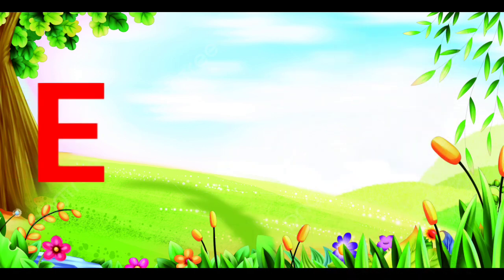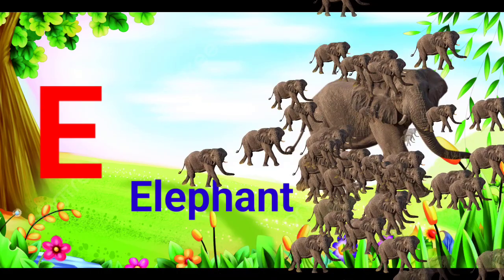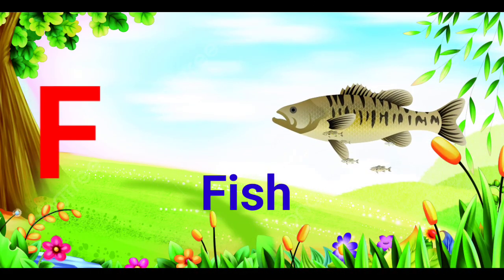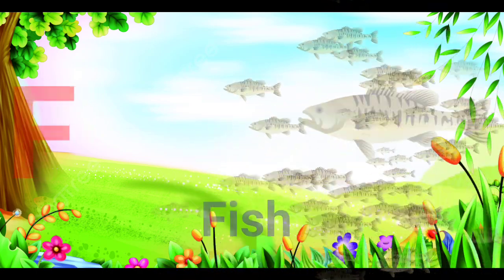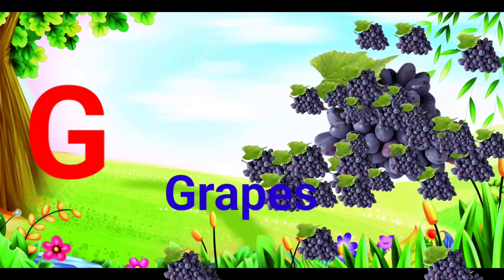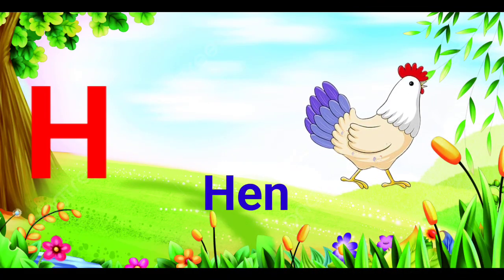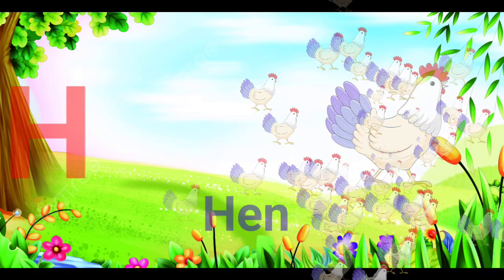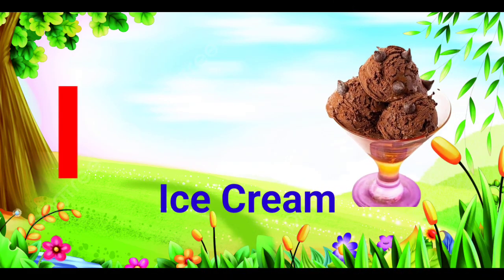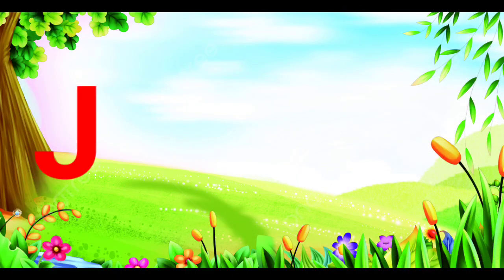E for elephant. F for fish. G for grapes. H for hen. I for ice cream. J for jug.